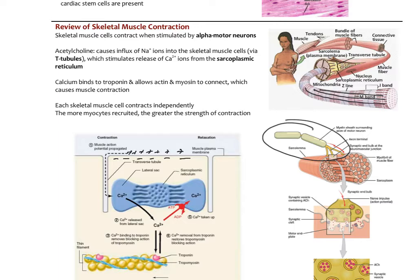That's the resting membrane potential. When the nerve activates the muscle, the main neurotransmitter is acetylcholine. When acetylcholine binds to its receptor on the muscle cell, that causes sodium ions to rush into the cell, making the inside of the membrane more positive — causing it to depolarize. Once that happens, it's going to open up channels for calcium, which rush into the cell. That also triggers calcium stored in the sarcoplasmic reticulum to release calcium.